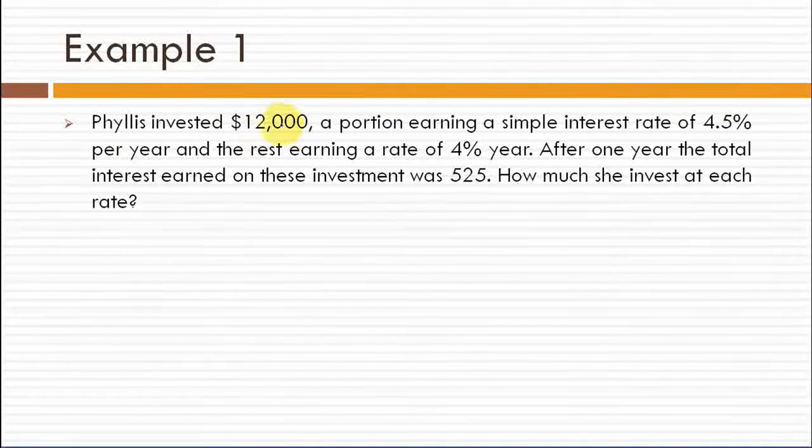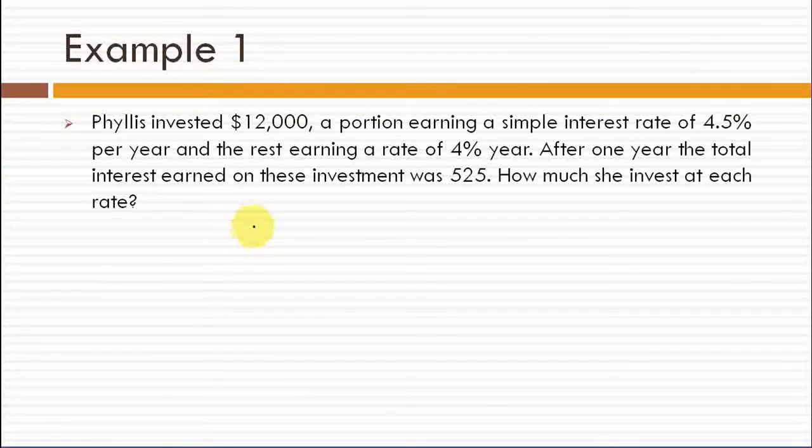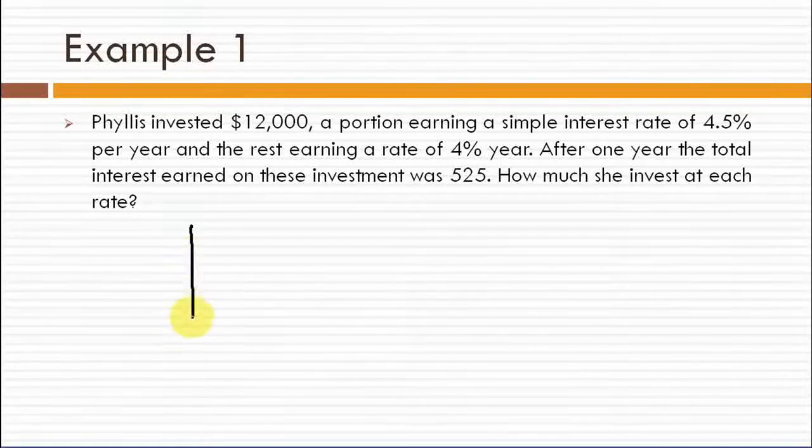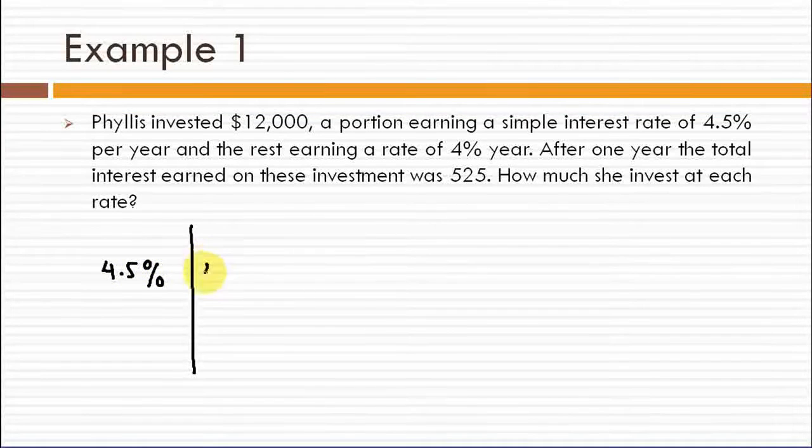Phyllis invested $12,000, a portion earning a simple interest rate of 4.5% per year and the rest earning at a rate of 4% per year. She invested the money at rate of 4.5% and the other one at rate of 4%.